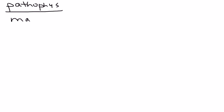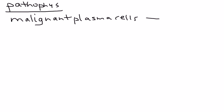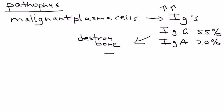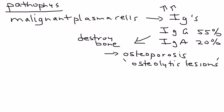Let's talk about the pathophysiology of multiple myeloma. You have these malignant plasma cells, and they produce large quantities of immunoglobulins — IgG about 55% of the time, and IgA about 20% of the time. These immunoglobulins go on to destroy bone, resulting in osteoporosis. Specifically, you see osteolytic lesions on x-rays — in the pelvis, spine, ribs, and skull.